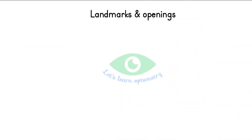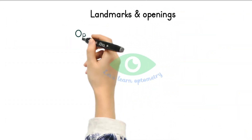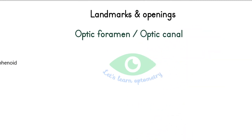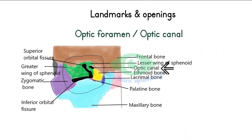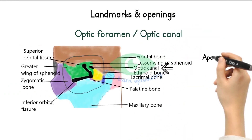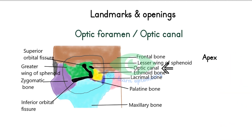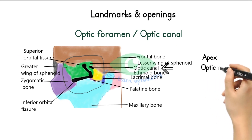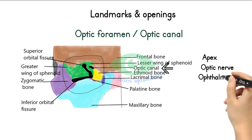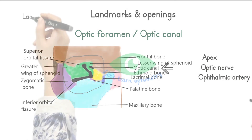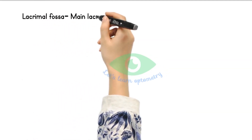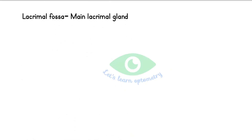Let's see some important landmarks of the orbit in detail. The optic foramen, or optic canal, is located at the apex. The opening to the optic foramen is bordered by the body of the sphenoid bone and the lesser wing of the sphenoid bone. It transmits the optic nerve and the ophthalmic artery. The lacrimal fossa is located anterolaterally on the orbital roof and it hosts the lacrimal gland.